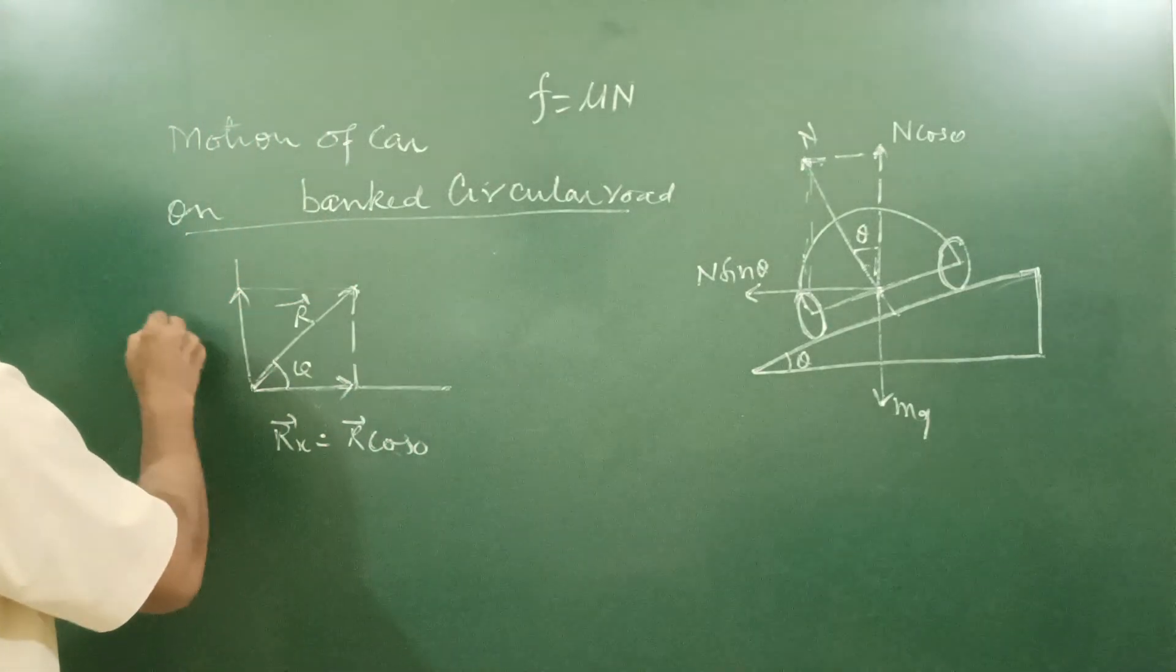This becomes perpendicular. And perpendicular upon hypotenuse is sin theta. So this side is component r sin theta, r y vector.